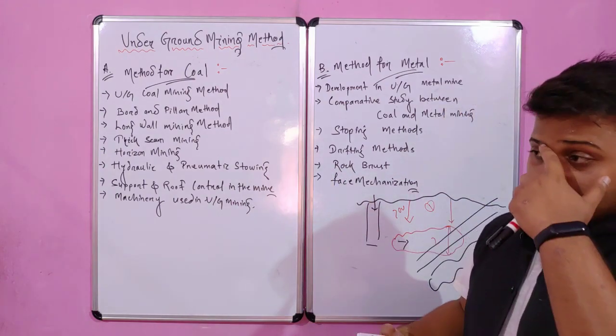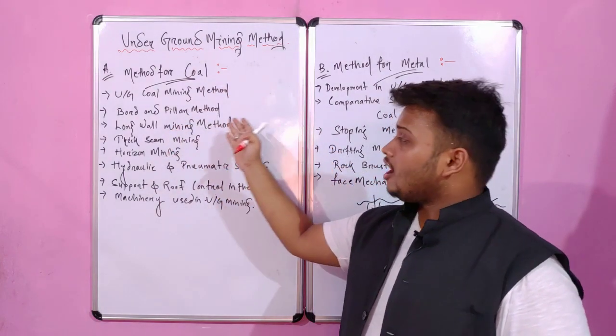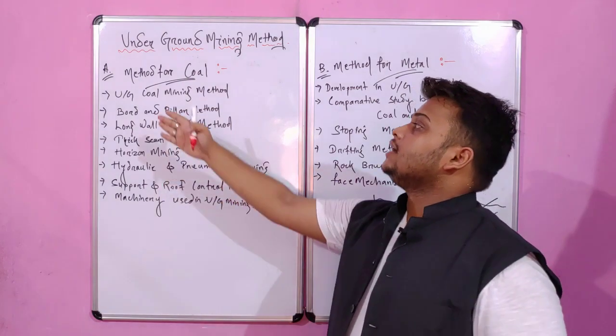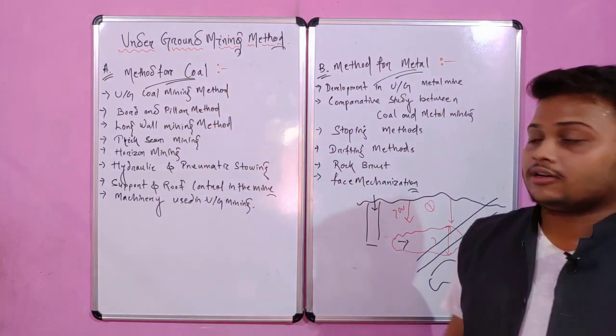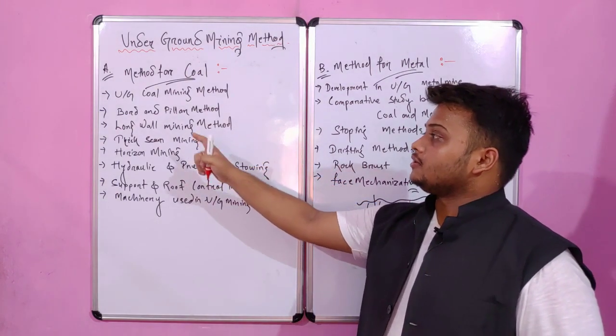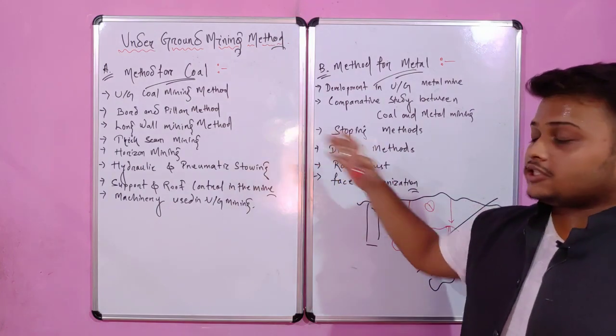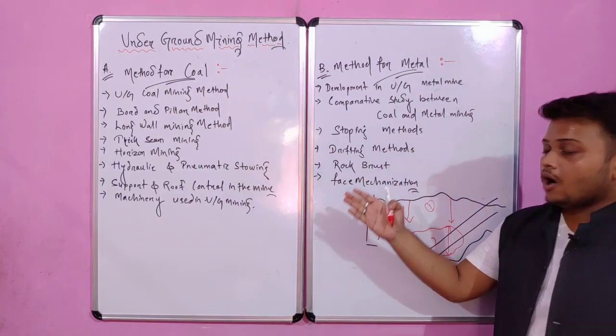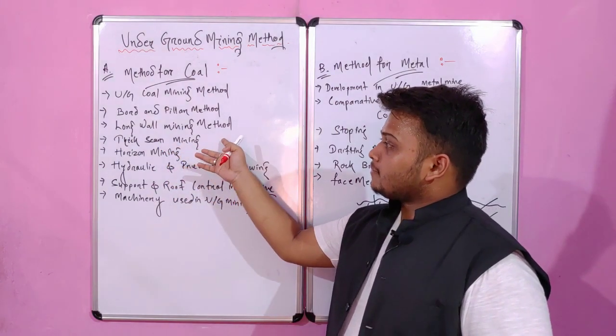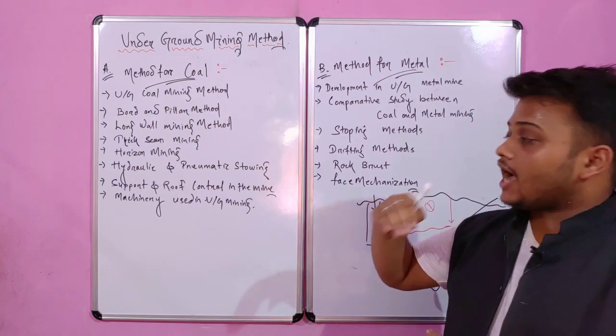We are deciding where we have to make the path of shaft or incline and the various developing areas. This criteria is discussed in the underground coal mining method. Then comes bord and pillar method. Bord and pillar and long wall mining are the two methods by which we extract coal from the earth's crust.